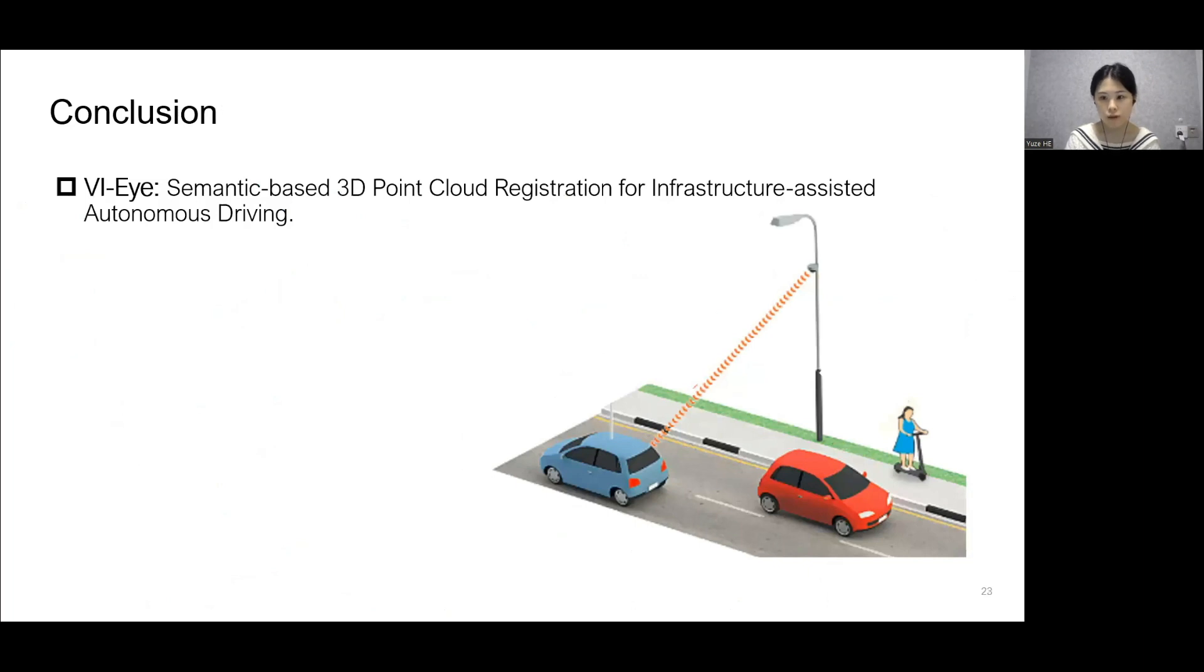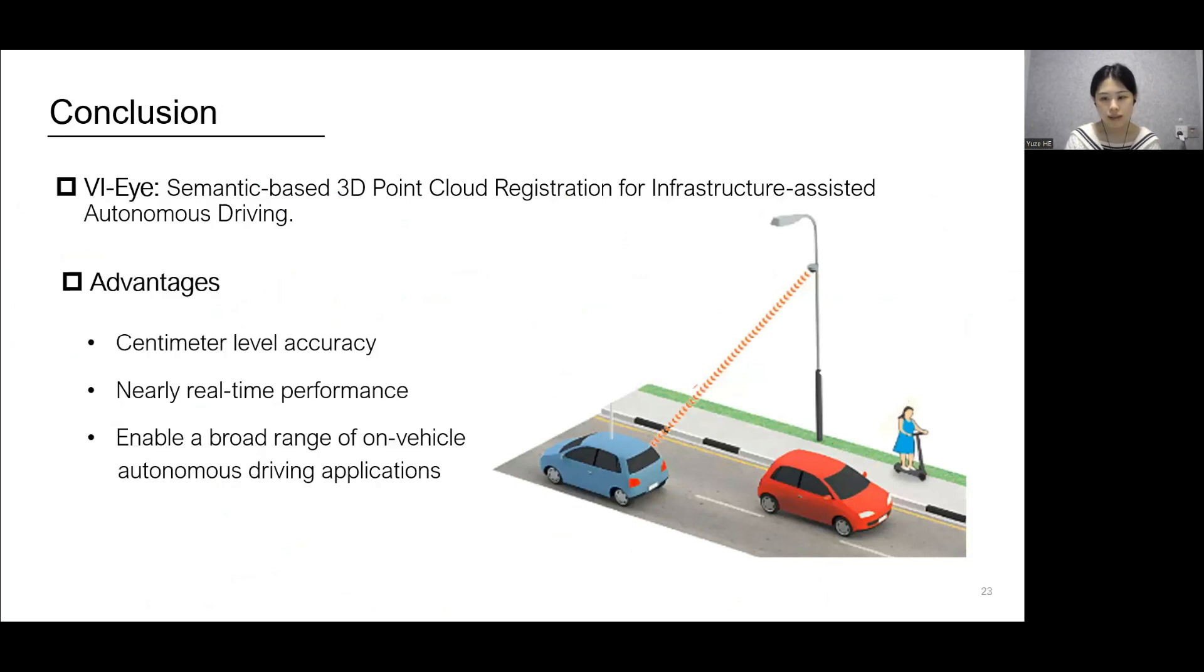In conclusion, we present VII, a system that aligns vehicle infrastructure point cloud pairs at centimeter-level accuracy in real-time, which enables a broad range of on-vehicle autonomous driving applications.